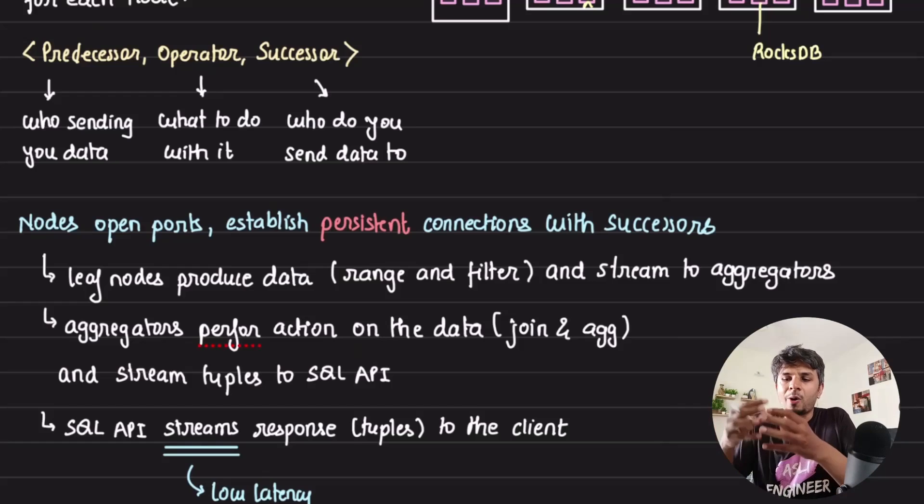It would start generating the data or rather producing the data. Basically what it means is, let's say my operator DAG says that leaf one, you do the range lookup on this range - let's say year for example. It would do range lookup on that and as and when it is iterating, it would be emitting, streaming data to the aggregator.